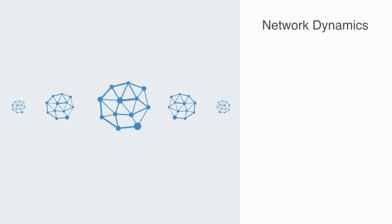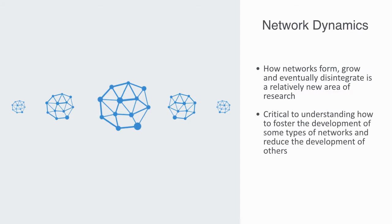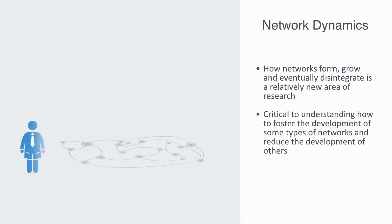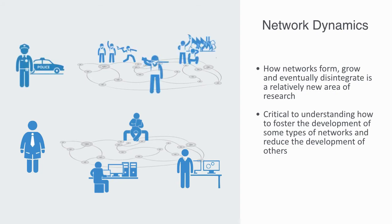The study of how networks form, grow, and eventually disintegrate is a relatively new area of research, but it is critical to understanding how to foster the development of some types of networks and reduce the development of others. For example, researchers have studied innovation as a process of diffusion across a network. Research like this helps us to better understand how innovative clusters, like Silicon Valley, can be fostered in other locations, or inversely, law enforcement agencies have studied the dynamics of terrorist networks in order to better understand how to disintegrate them. Thus, we're interested in both network growth and decay.